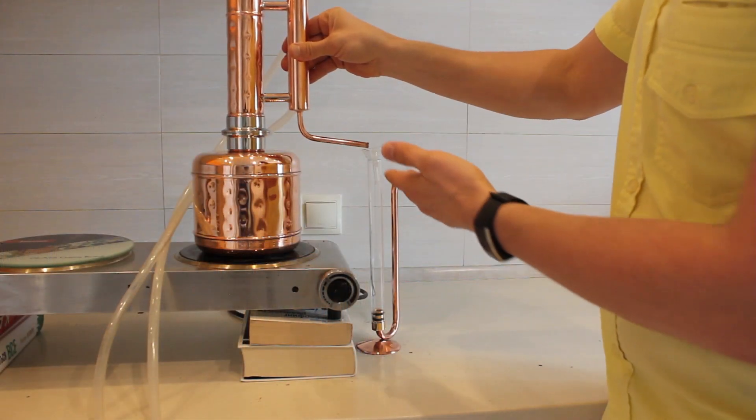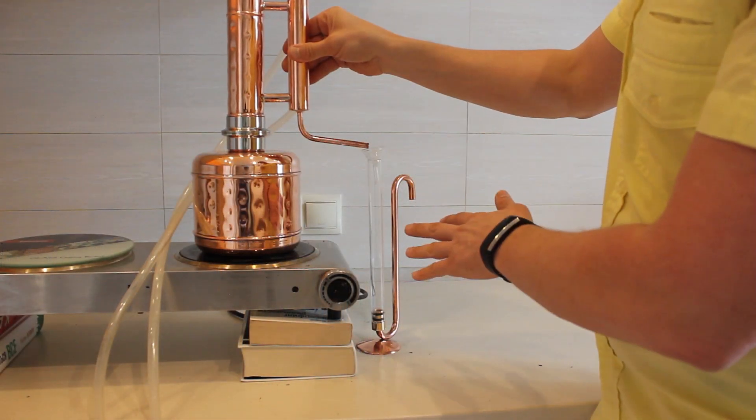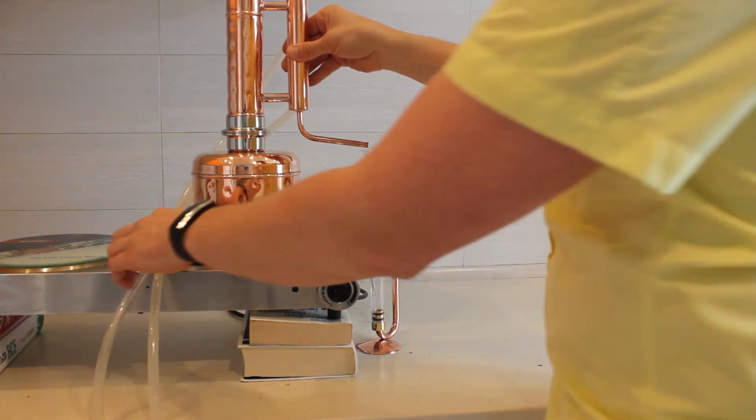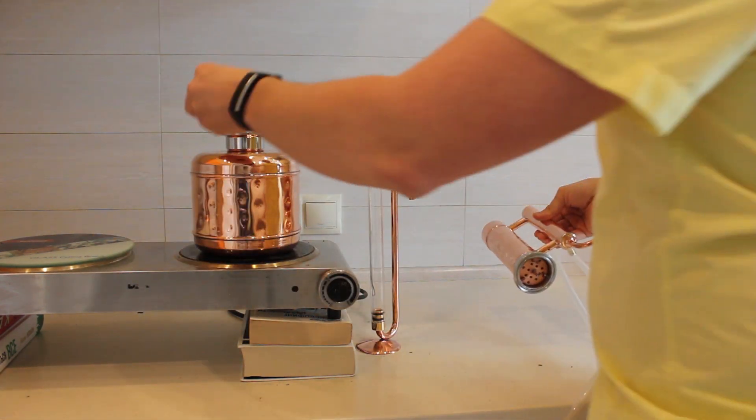So we have adjusted the height of the equipment with the height of the essential oil separator. Now we put the silicone gasket...